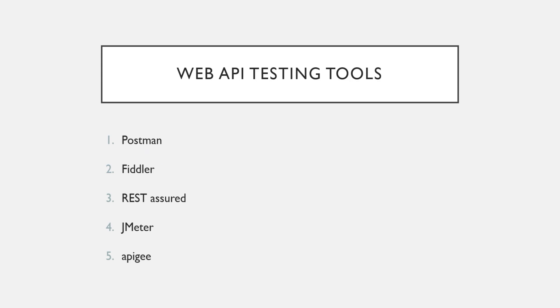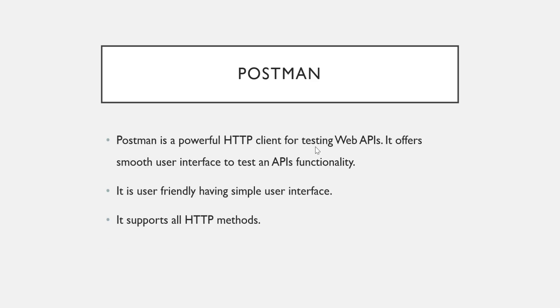Postman is a powerful HTTP client for testing Web APIs. It offers a smooth user interface to test API functionality. Besides being an HTTP client, it offers many other features, but primarily we'll use it as an HTTP client. Initially, Postman came as an add-on or extension in Google Chrome, but now it is a separate desktop application and also available as a web version. It supports all HTTP methods and has a simple user interface.